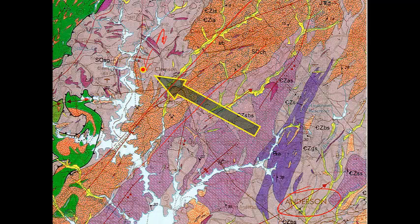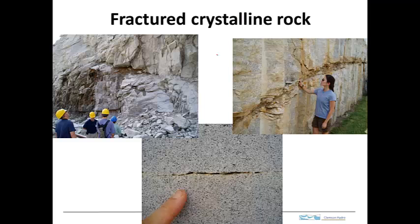We can also see a yellow pattern, which is alluvium along the streams. So the bedrock is fractured crystalline rock — these high-grade metamorphic gneisses and schists.